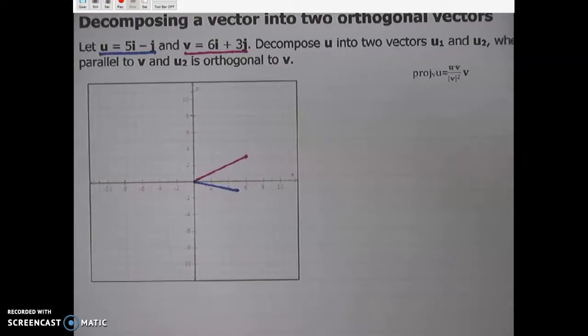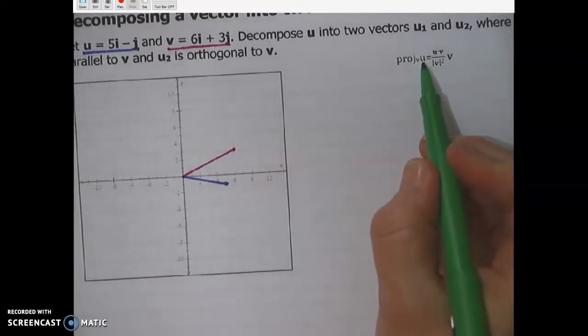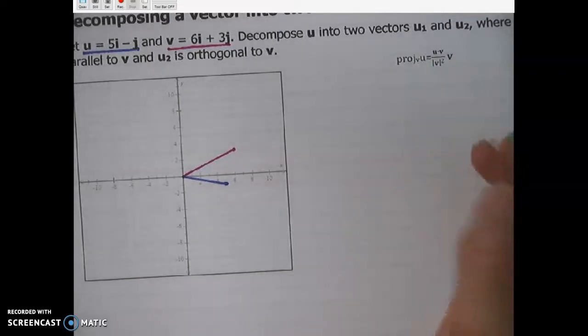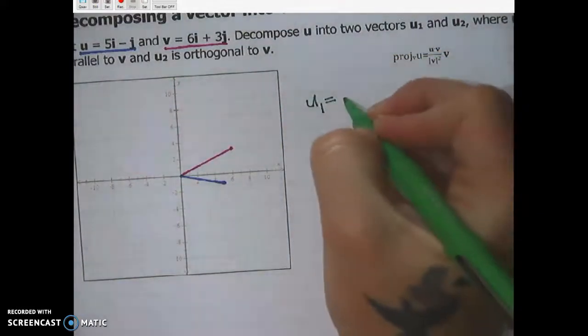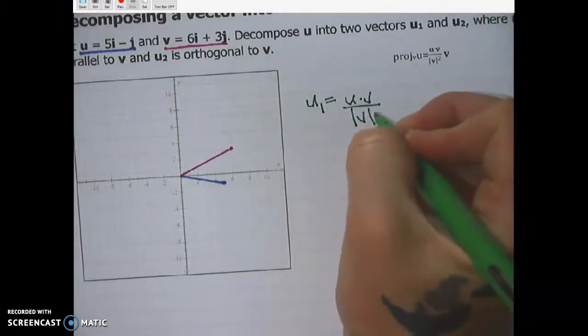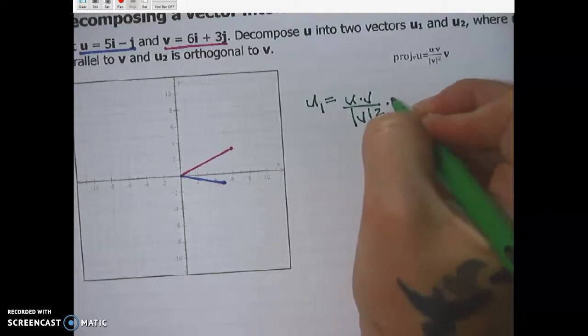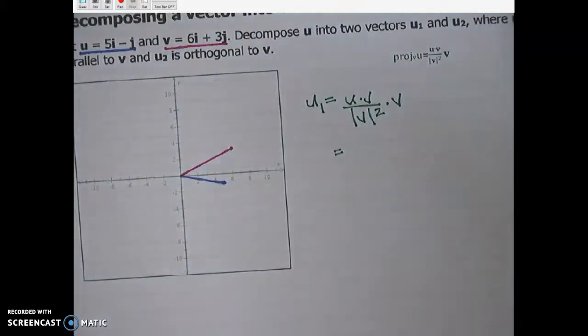So the first thing that I have written here is I have the projection formula, and we're going to use the projection formula to give us the first vector u1 that will be parallel to v, because notice this is the projection of u onto v. So I'm going to change that and say u1 will be u dot v over the magnitude of v squared times v.